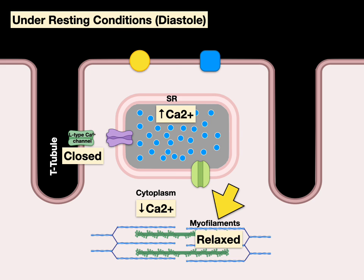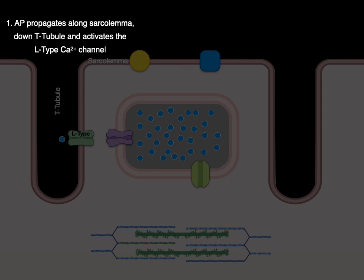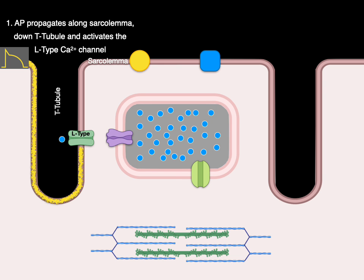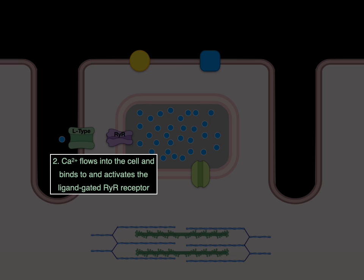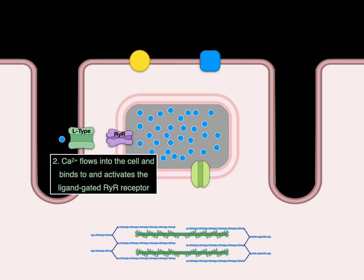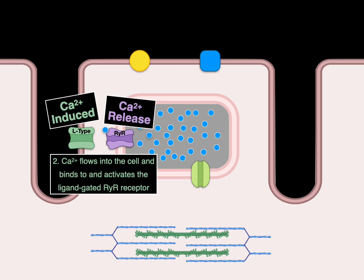Let's now go through the five steps that will bring systole into play. Step one: the action potential propagates along the sarcolemma, down the T-tubule, and activates the L-type calcium channel. The L-type calcium channel opens during phase two and allows calcium to come in. The calcium flows into the cell and binds to and activates the ligand-gated ryanodine receptor — there's the calcium current. Calcium binds to ryanodine and the ryanodine receptor opens: calcium-induced calcium release.